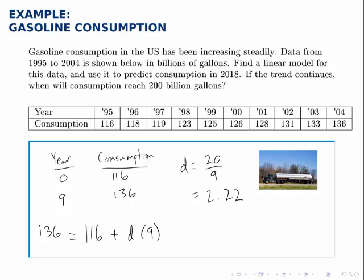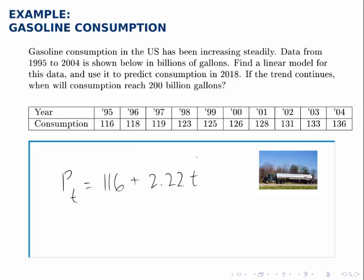Whichever way you start thinking about the growth rate, the growth rate is 2.22 billion gallons per year. Here's our full linear model: the consumption in any given year is 116 plus 2.22 times t, where t is years after 1995. We picked 1995 to be our year zero, which was somewhat arbitrary, but we need to stay consistent through the rest of the problem.